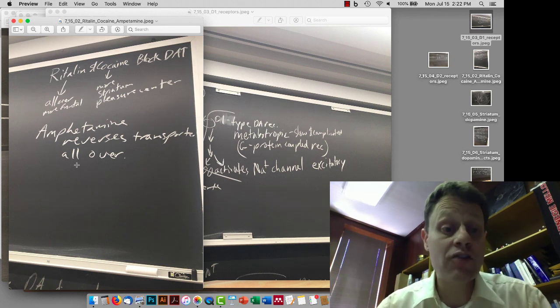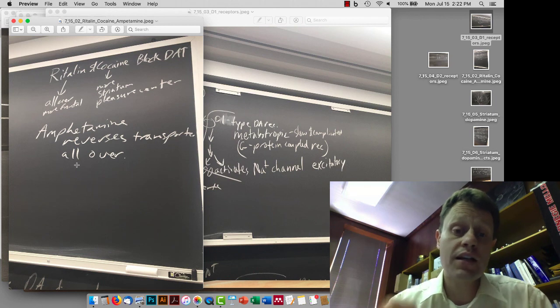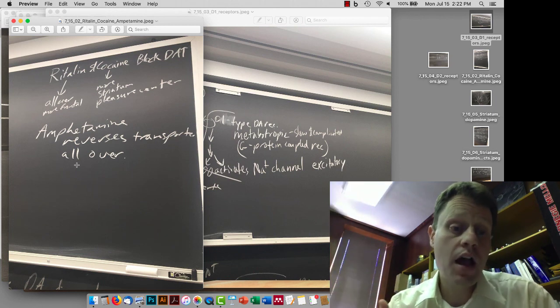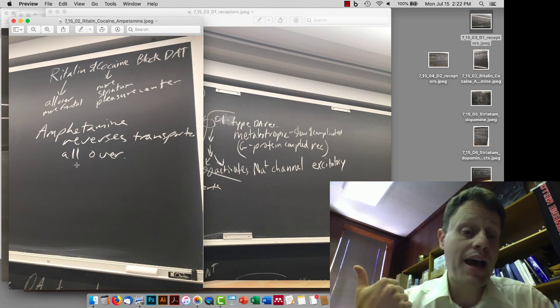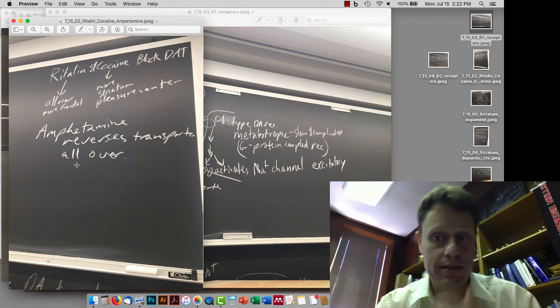Amphetamine actually doesn't just block the transporter, it reverses the transporter. So instead of sucking dopamine out, that same protein squirts dopamine into the synapse. And that happens all over the brain, so it can both cause pleasure and urges to move and enhance attention.